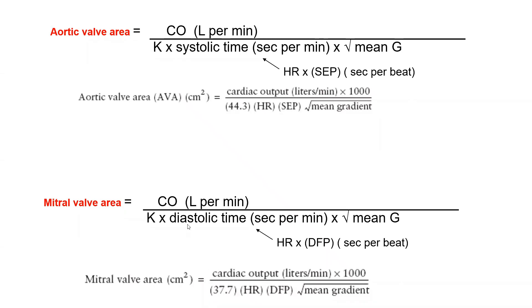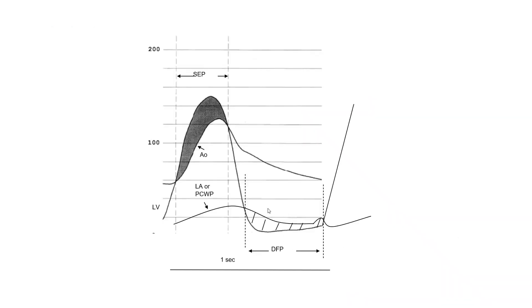The mitral valve area uses the same concept — cardiac output divided by diastolic time instead of systolic time, since that is when cardiac output crosses the mitral valve. Diastolic time per beat is the diastolic filling period multiplied by heart rate. This diastolic filling period is the distance between the two points of intersection of LA and LV pressure — excluding isovolumic contraction and relaxation times.